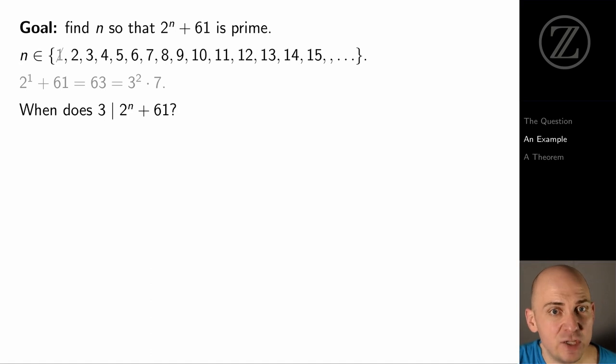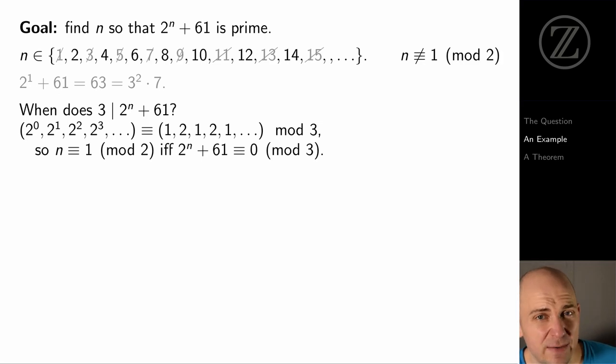But let's think more generally, when does 3 divide 2 to the n plus 61? Those will be values of n for which 2 to the n plus 61 is definitely not prime. So let's look at powers of 2 modulo 3. So 2 to the 0, 2 to the first, 2 to the second, and so on. But look at that modulo 3. That's 1, 2, 1, 2, 1, 2, and so on. Well, what this means is that if n is congruent to 1 modulo 2, then 2 to the n plus 61, that's exactly the same thing as 2 to the first plus 61. Well, 2 to the first plus 61 is a multiple of 3. It's 0 mod 3. So when n is 1 modulo 2, 2 to the n plus 61 can't possibly be prime.